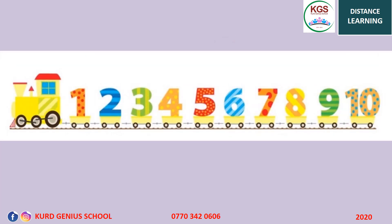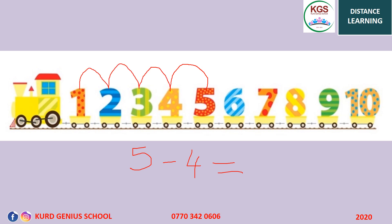Let's write another example. For example, 5 minus 4. 5 minus 4 equals what? We are on number 5. We count back four numbers — 4, 3, 2, 1. So 5 minus 4 equals 1, because we count back four numbers: 1, 2, 3, 4.